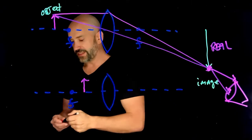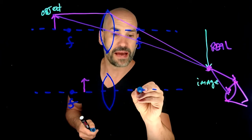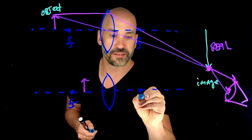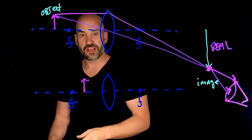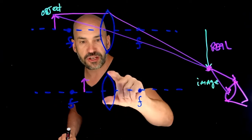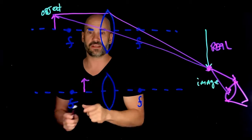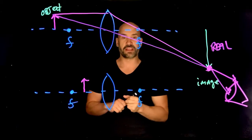FYI, this is the setup for a magnifying glass. For a magnifying glass, you want to put the lens up close to the object so that it's inside the focal length of that object. And you're going to see the cool thing that happens here.